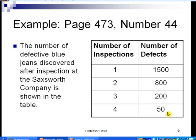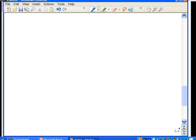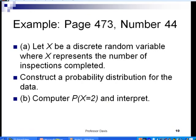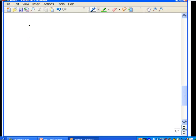It says here the number of defective blue genes discovered after inspection at the Saksworth Company is shown in the table, and you see those numbers listed there in slide number nine. So what we want to do is let X be a discrete random variable where X represents the number of inspections completed. First, we want to construct a probability distribution for the data, and then compute P of 2 and interpret what that is. So if you remember the table that we have here, first what we want to do is to add up the total number of defects, and then we'll divide each one of the defects by that total, and that will give us a relative frequency, which we can use for a probability here.